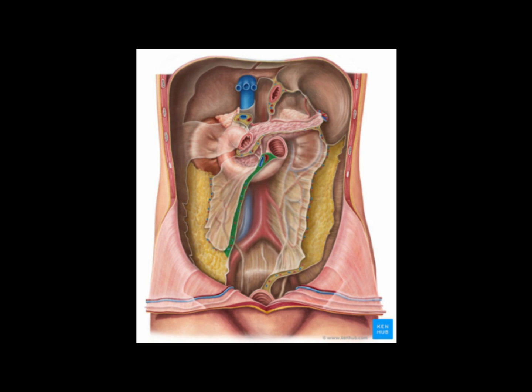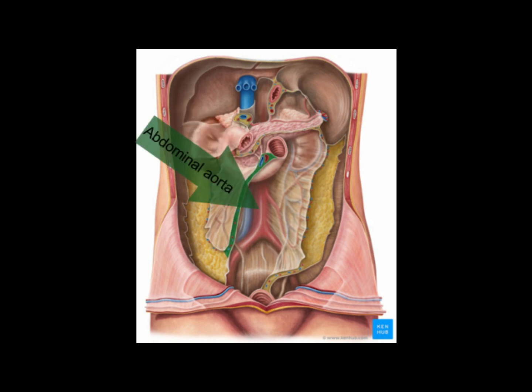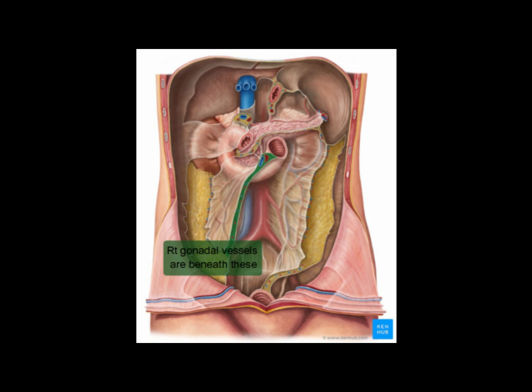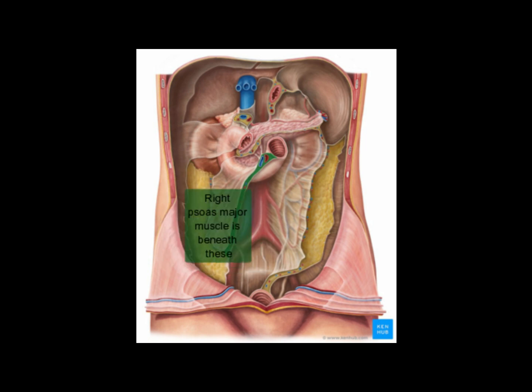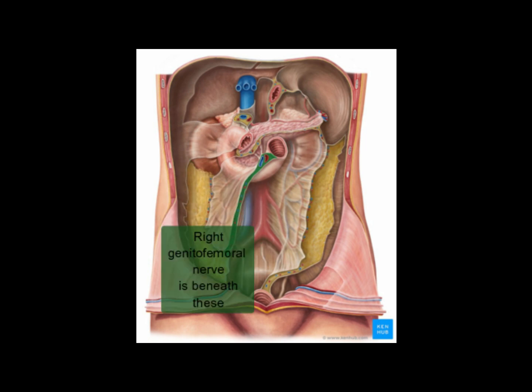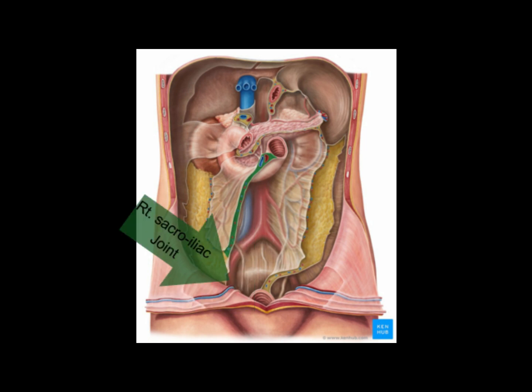The structures crossed by the root of the mesentery, from above downwards, are: the third part of the duodenum, abdominal aorta, inferior vena cava, right gonadal vessels, right ureter and right psoas major, right genitofemoral nerve, and the right sacroiliac joint.